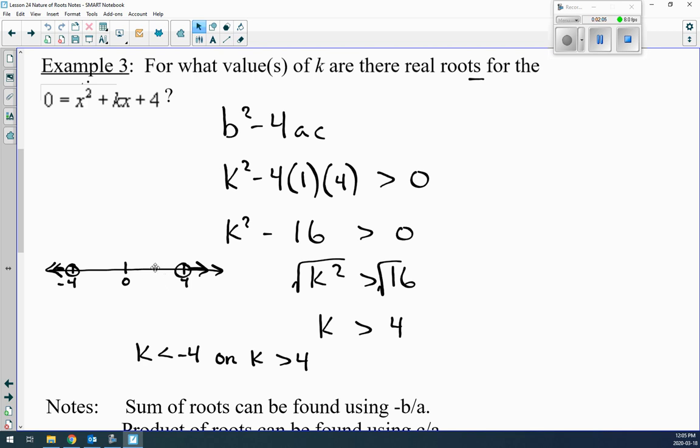So then try some values. If we tried, let's say, 2. If we plug 2 in, so the k squared will be 2 squared. So 4 minus 16, that's a negative number. So that doesn't work for us. So then we can try 5 and try on the right-hand side of 4. So 5 squared would be 25. 25 minus 16, it's a positive number.